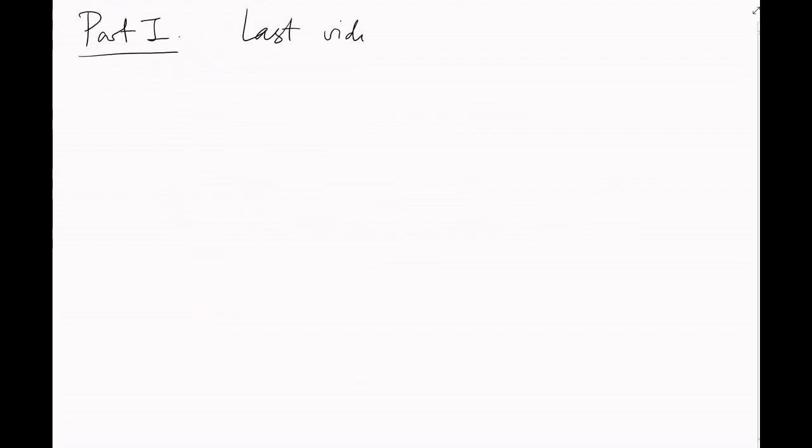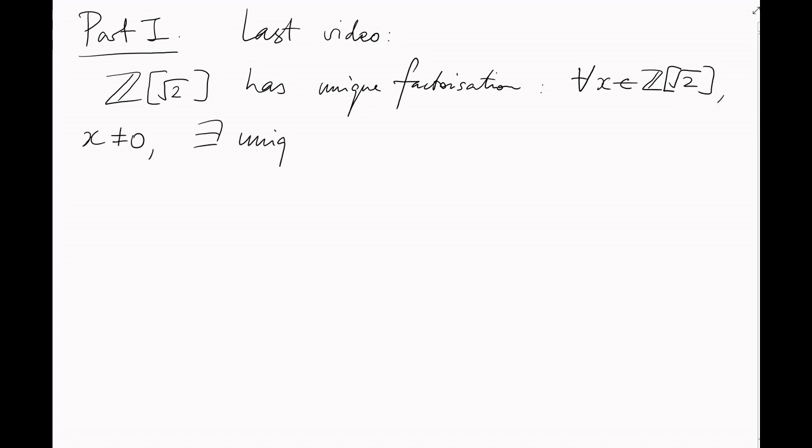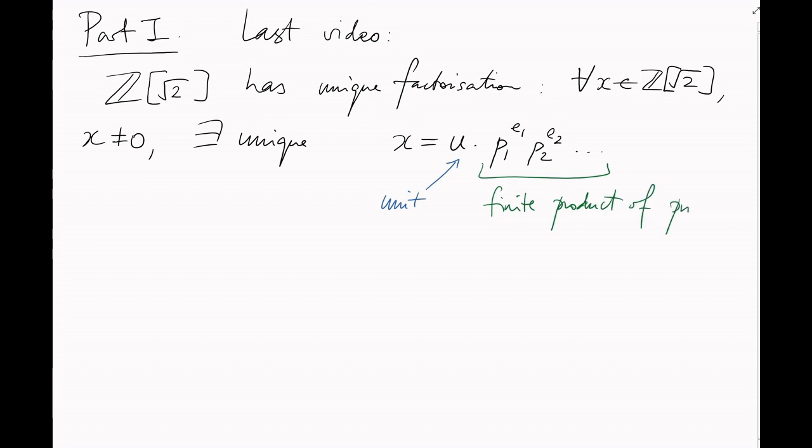So, last video we proved that z-adjoin root 2 had unique factorization. That is, every non-zero element is a unique multiple of a unit and a finite product of prime elements.